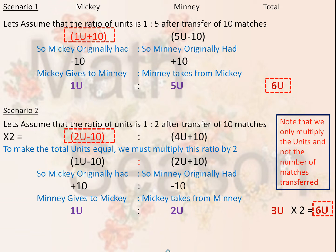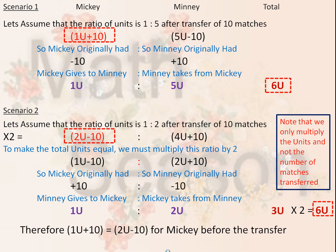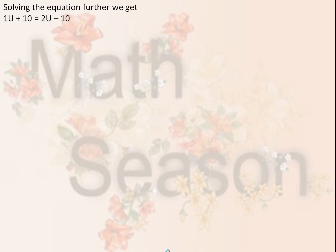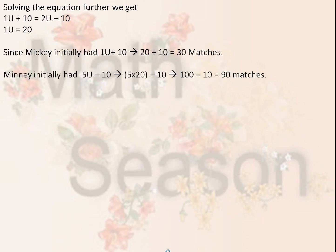Now we have comparable ratios. Mickey's original matches are expressed as 1 unit plus 10 and also as 2 units minus 10. Solving the equation: 1 unit plus 10 equals 2 units minus 10, so 1 unit equals 20. Since Mickey initially had 1 unit plus 10, he had 20 plus 10, or 30 matches. Minnie initially had 5 units minus 10, or 5 times 20 minus 10, which equals 90 matches.